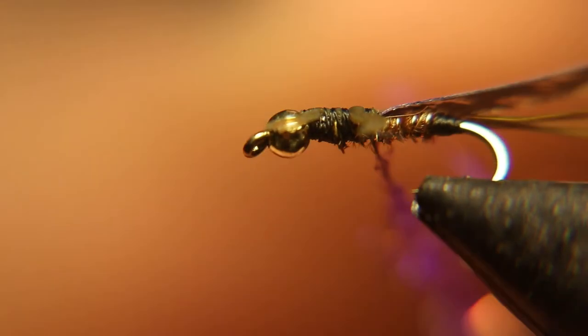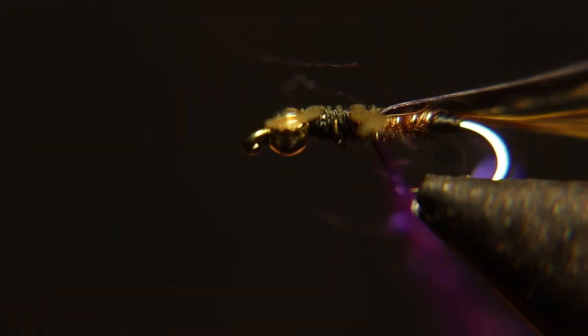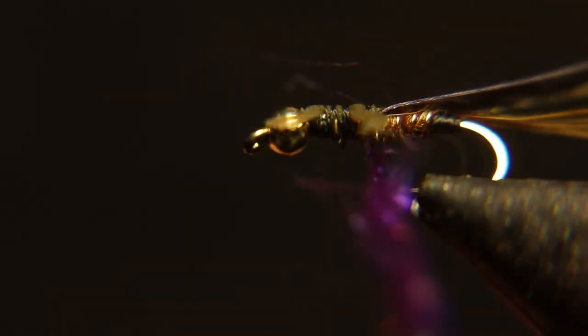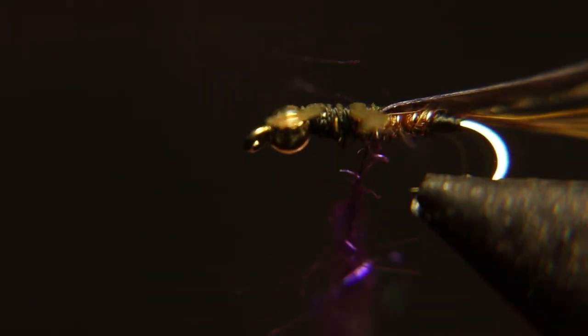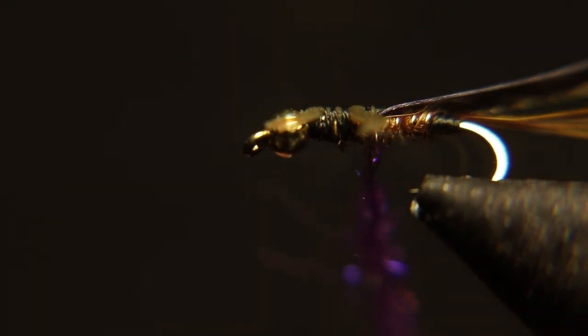Then you wrap that up to the bead, pull your nymph skin up to the bead, tie it down, and cut off the nymph skin.